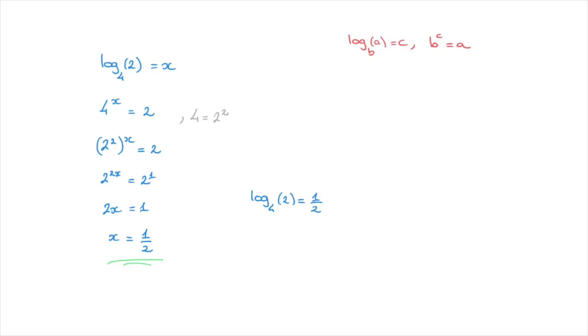We could, of course, write this in exponential form. That would be 4 to the power of 1 over 2 equals to 2, which is saying that the square root of 4 equals to 2. And we're done.